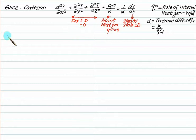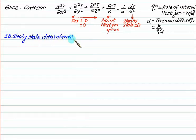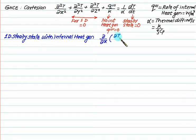For a one-dimensional steady-state case with internal heat generation: one-dimensional means ∂²T/∂y² = 0 and ∂²T/∂z² = 0; steady-state means ∂T/∂t = 0; and q''' is present. The governing equation becomes ∂²T/∂x² + q'''/k = 0, which can be written as d/dx(∂T/∂x) + q'''/k = 0.